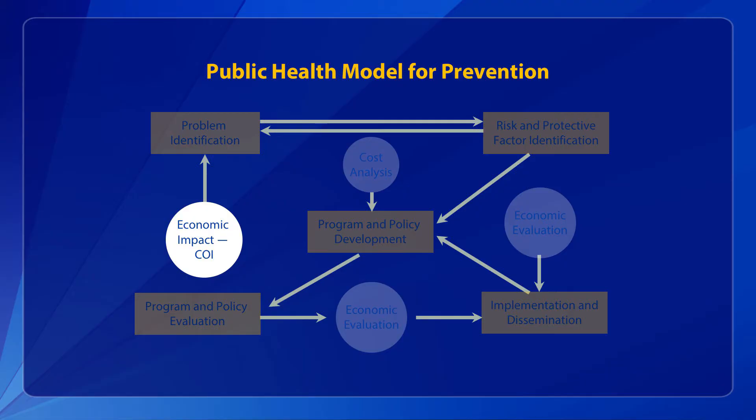Measures of disease burden related to health outcomes include mortality, morbidity, life expectancy, and quality of life. Other examples include quality-adjusted life expectancy, disability-adjusted life expectancy, healthy days equivalent, and activities of daily living.